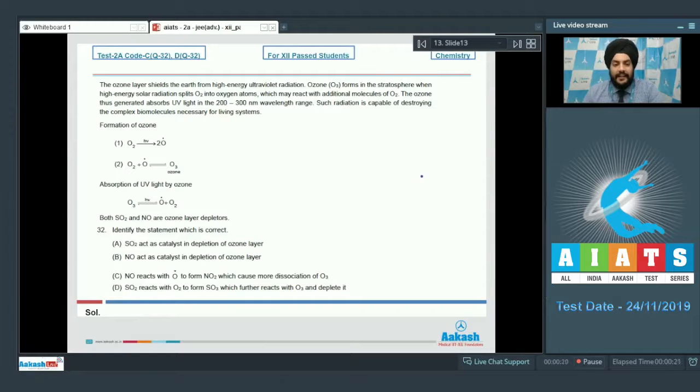Let's start with the paragraph for questions 32 and 33. The ozone layer shields the earth from high-energy ultraviolet radiation. Ozone forms in the stratosphere when high-energy solar radiation splits O2 into oxygen atoms which may react with additional molecules of O2. The ozone thus generated absorbs UV light in the 200 to 300 nanometer wavelength range. Such radiation is capable of destroying complex biomolecules necessary for living systems.